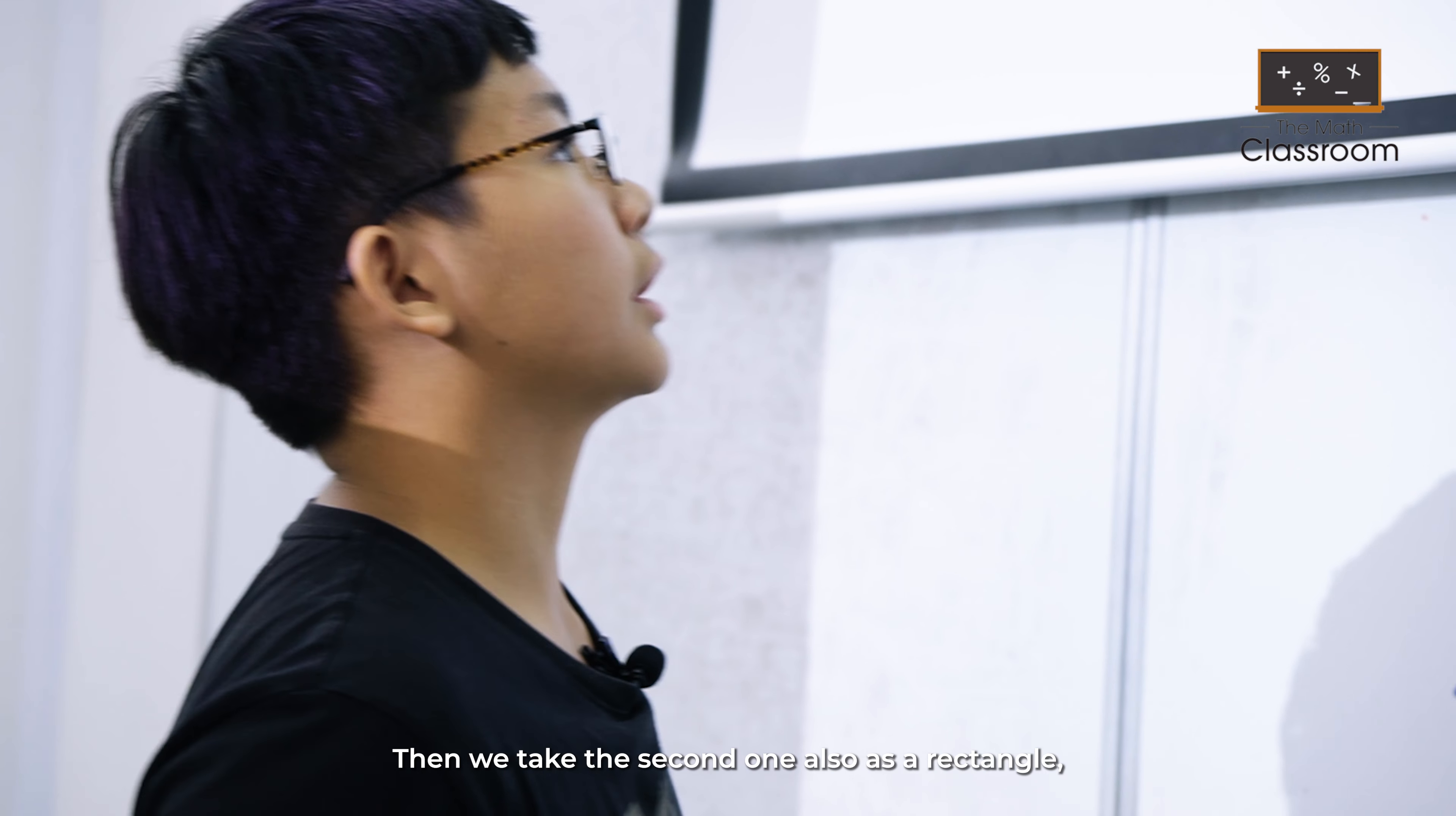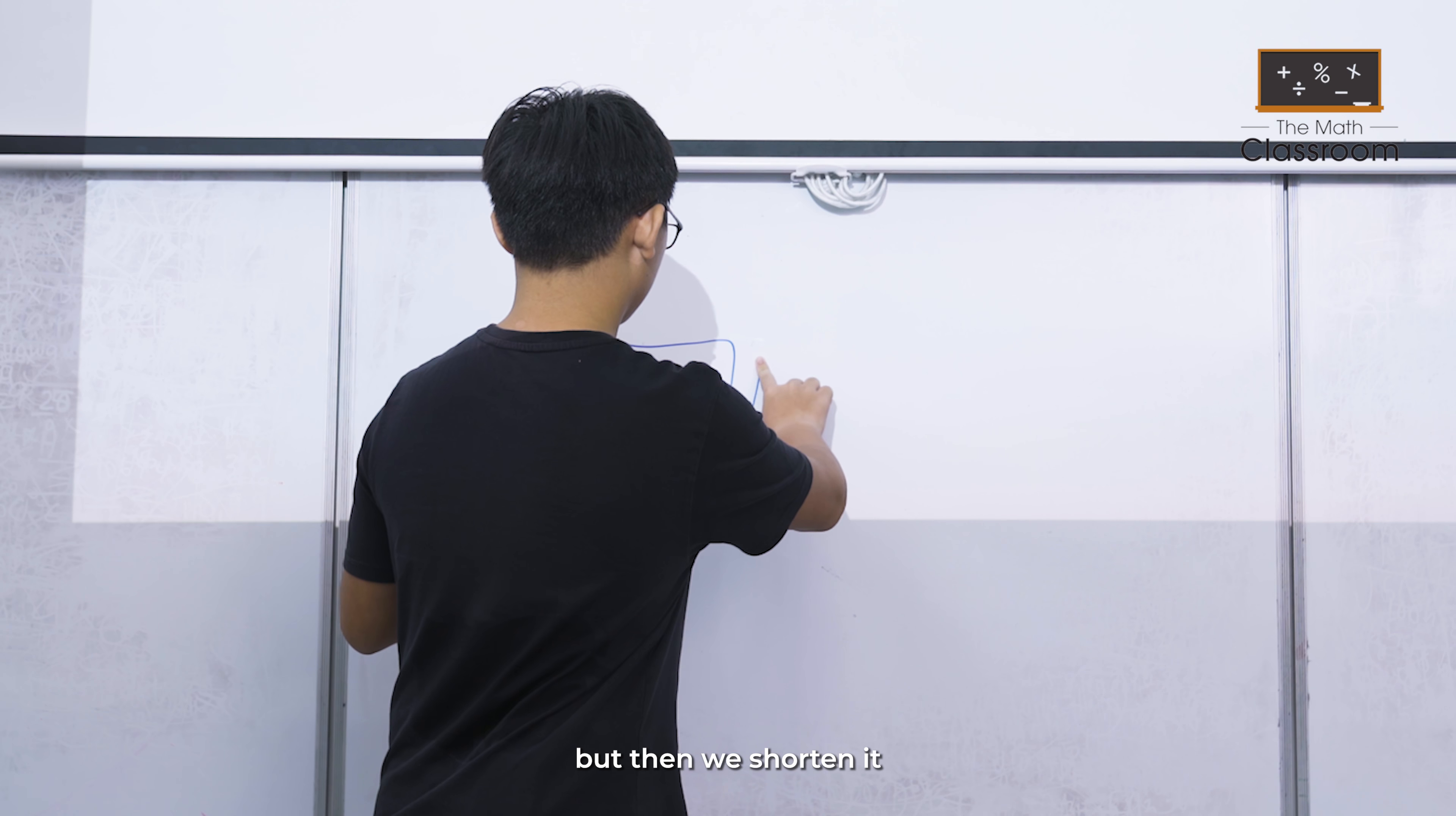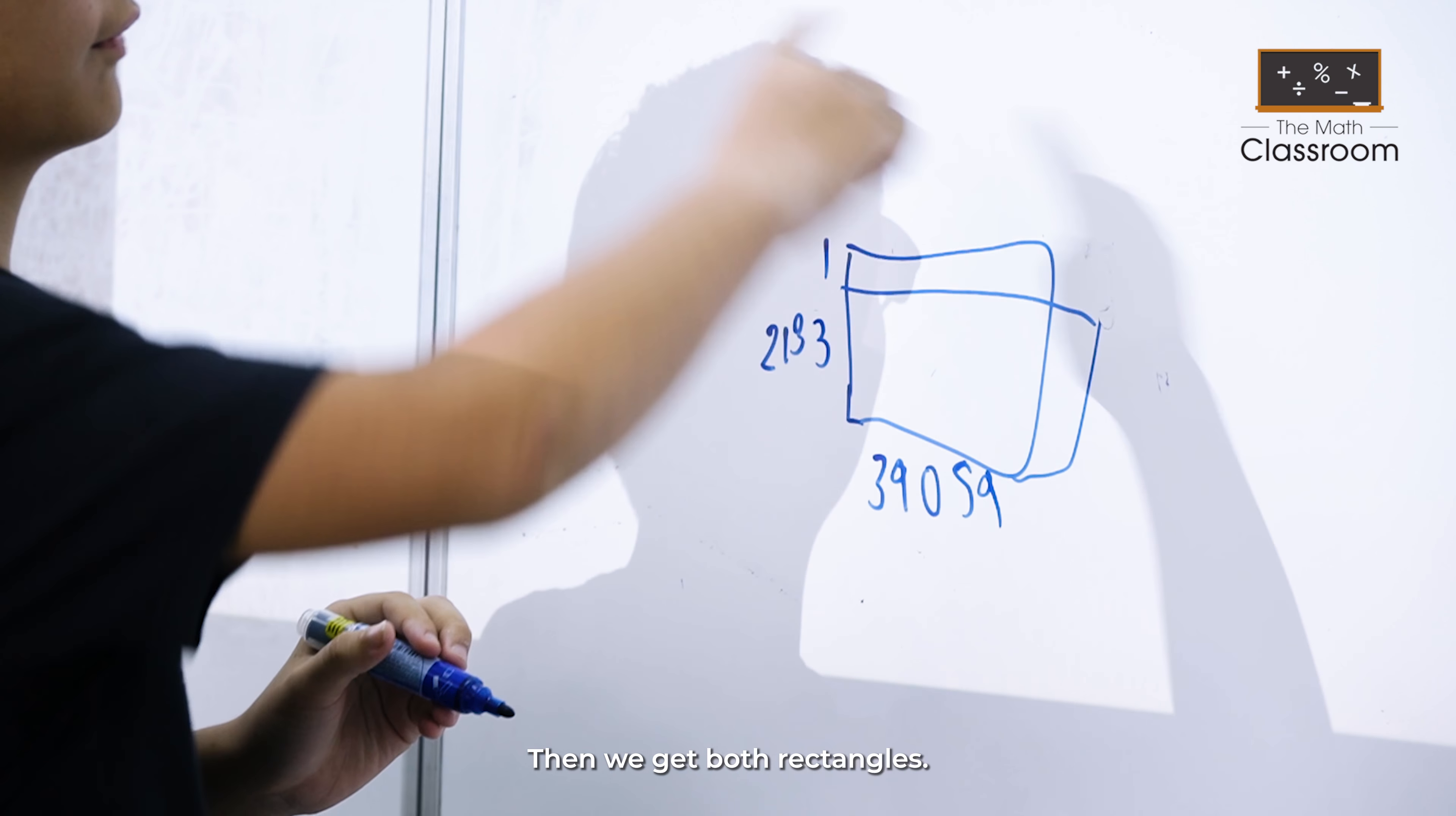Then we take the second one also as a rectangle, but then we overlap it. So we have to get an extra 1 here, but then we shorten it because the height is only 2133. Then we get this one as 2133 and this one as an extension of 1.